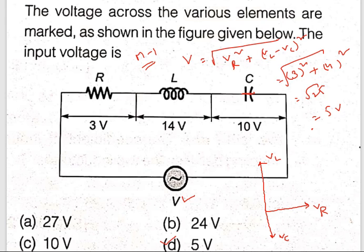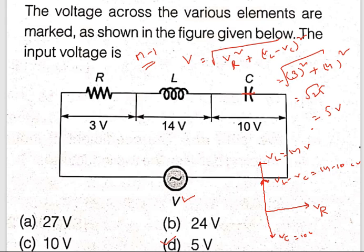VR, VL, and VC resultant: VL equals 14 volts given and VC equals 10 volts given. The resultant — you are projecting VC on the upper side, so the resultant will be VL minus VC. That is 14 minus 10, that is 4 volts. This is the resultant for VL and VC. For the resultant of that and VR, this will be the final resultant.